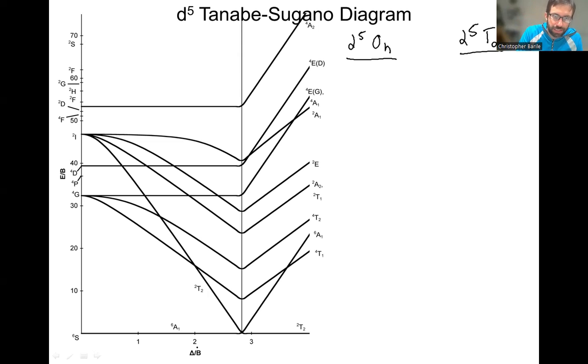Same idea with delta. Delta is your ligand field strength, so it's the gap between your EG and your T2G in octahedral, or your T2 and your E gap, your delta T. It could be delta O or delta T. It's just called delta to be generic here.